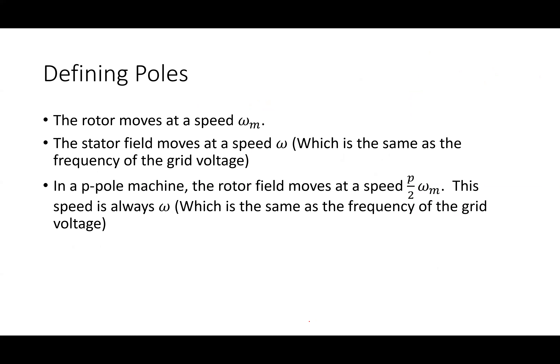The rotor moves at speed omega_M. Hooking up to a grid, the stator field produced by the stator windings always moves at grid frequency omega. For the machine to work properly, the rotor field moves at speed (P/2) × omega_M. The grid frequency omega equals (P/2) × omega_M, and since the grid frequency is fixed at 2π×60, we can figure out the actual rotational speed from there.